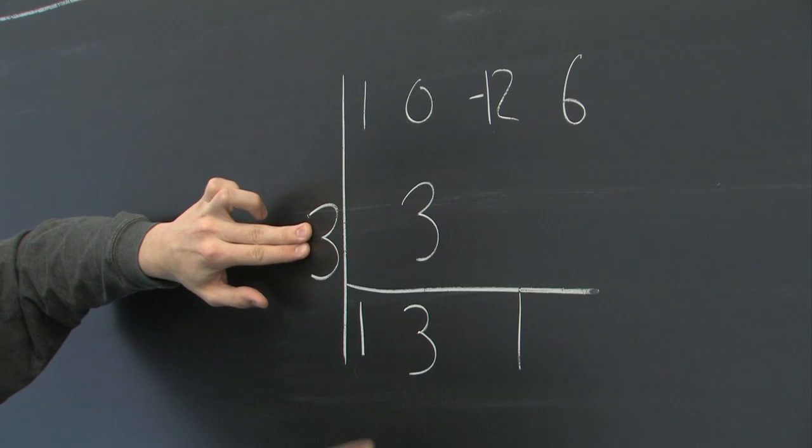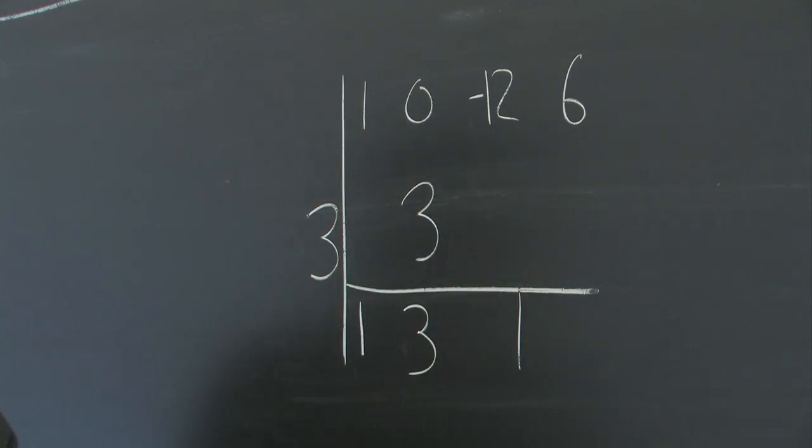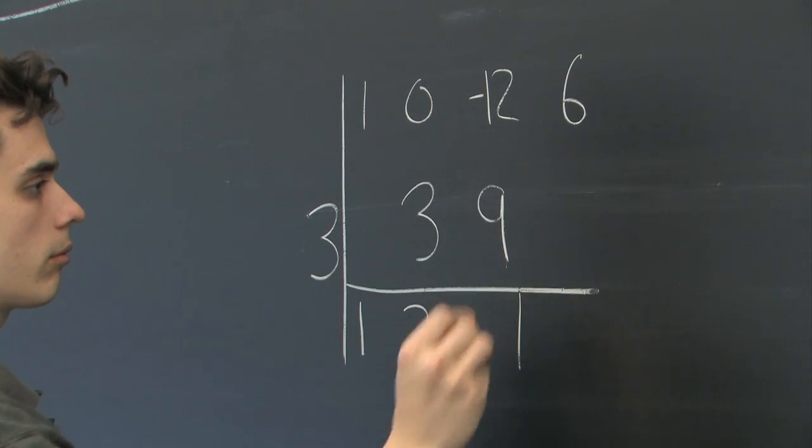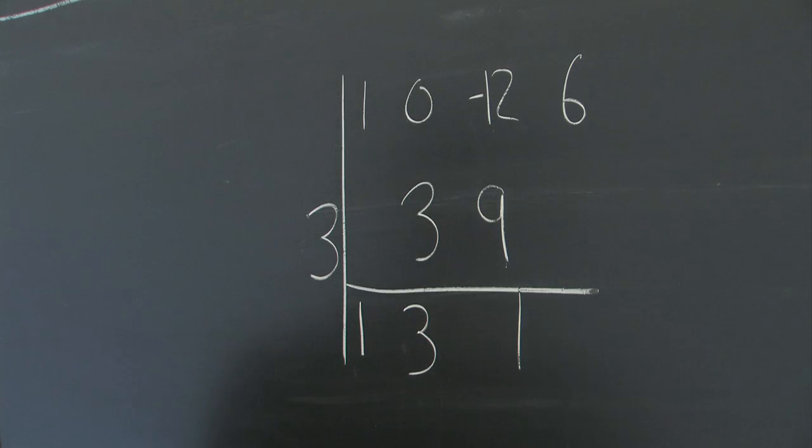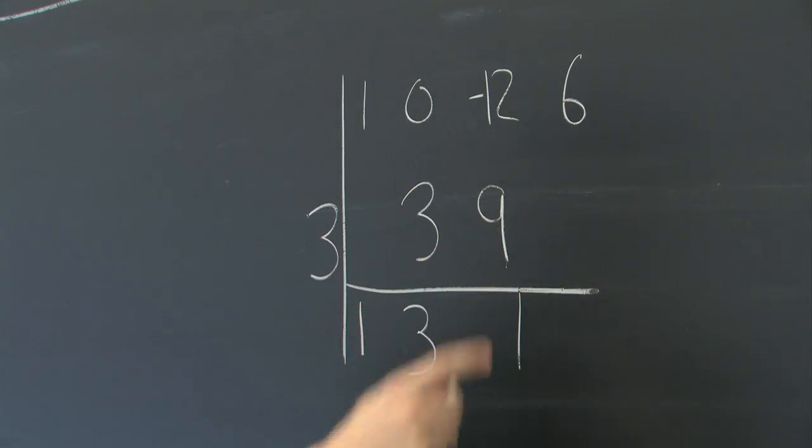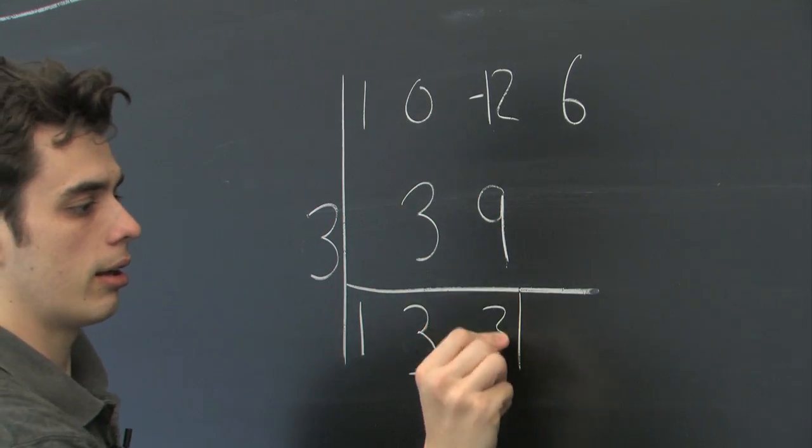Next multiply 3 by this number and write it here. And perform addition again. Minus 12 plus 9, negative 3.